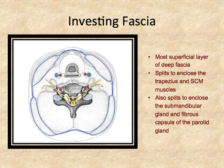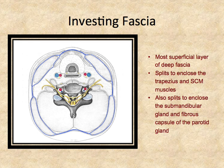Investing fascia lies just deep to the subcutaneous tissue. Looking at the anterior aspect of the neck, it's going to be beneath the platysma muscle because the platysma muscle is embedded within the hypodermis. The interesting thing about the investing fascia is that it splits to enclose both the trapezius muscles and the sternocleidomastoid muscles, both innervated by the same nerve. When you're dissecting and opening up the fascial covering to look at the muscle fibers underneath, you're actually removing this layer of investing fascia.